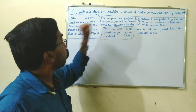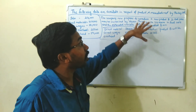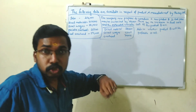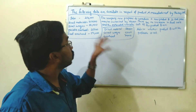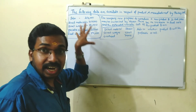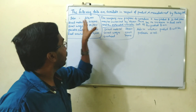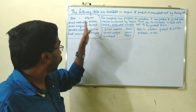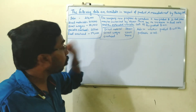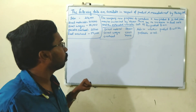The following data are available in respect of Product A, manufactured by Punkaj Limited. That is related to the cost details: Sales $2,50,000; Direct materials $1,00,000; Direct wages $50,000; Variable overhead $25,000; Fixed overhead $50,000.